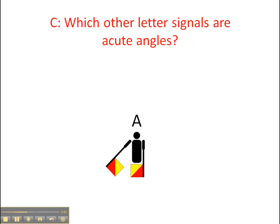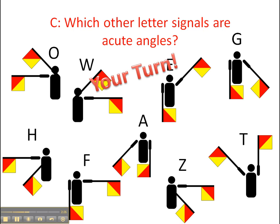Question C: The letter A is represented by an acute angle, and that's because it's less than 90 degrees. Which other letter signals are acute? Well, here's some examples. I've thrown in two though that are not acute.